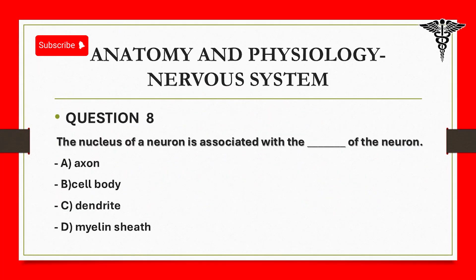Question 8: The nucleus of a neuron is associated with the: A. Axon. B. Cell body. C. Dendrite. D. Myelin sheath.